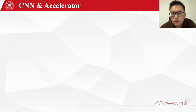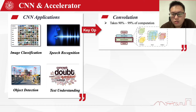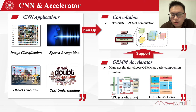Nowadays, CNNs have led to their wide adoption in many fields, such as image classification, speech recognition, object detection, and text understanding. The most important part of CNN is the convolutional operation, which takes up 90% to 99% of the computation and running time. Many accelerators have been created to address complex neural network computation. To support computational generality, many commercial accelerators, such as Google's TPU and Nvidia's Tensor Cores, choose GEMM as the basic computational primitive. But it is non-trivial to support convolution on GEMM-specialized accelerators.